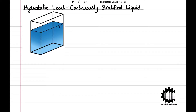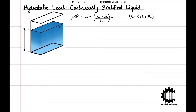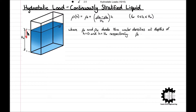Consider the situation shown in the diagram of a uniform rectangular tank containing a continuously stratified liquid with a density distribution rho(h) = rho_0 + (rho_h - rho_0) / h_0 × h, for h = 0 to h = h_0. Here h_0 is the uniform depth of the liquid, and rho_0 and rho_h denote the liquid densities at depths h = 0 and h = h_0 respectively, with rho_0 less than rho_h — i.e., density increases with depth.